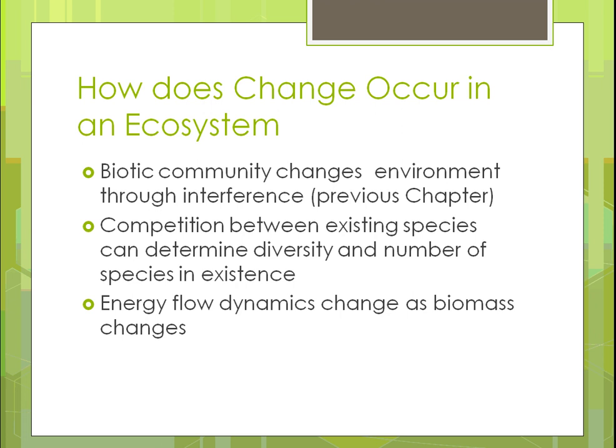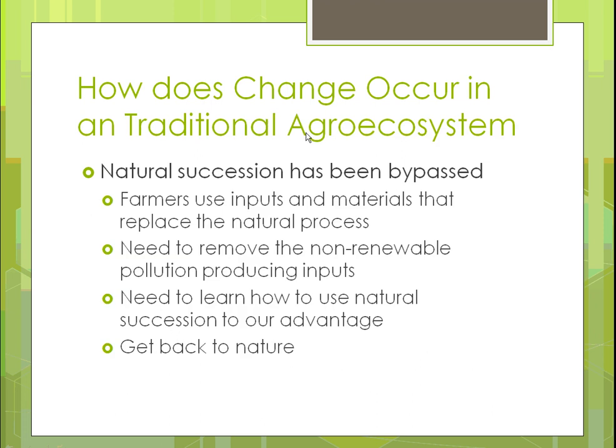How does change occur in an ecosystem? It's biotic — living — so there are changes to the environment through interferences. There's competition between existing species, like survival of the fittest, which determines which ones persist. Energy flows between biomass change as well. For example, if herbivores are eating grasses, that changes the energy flow dynamic, and it could be good or bad depending on how you use it.